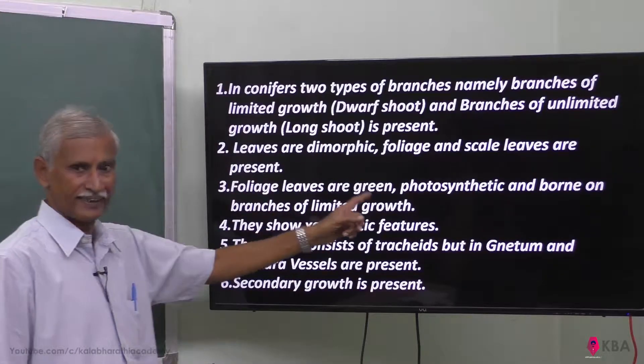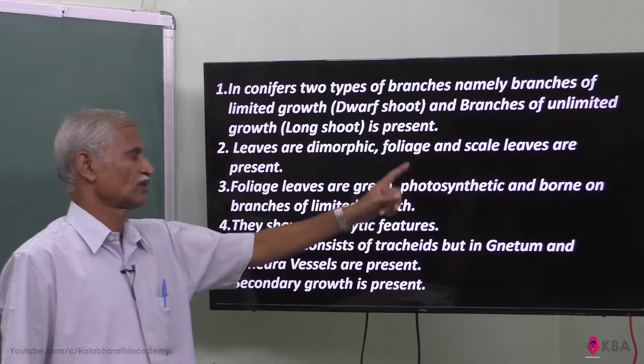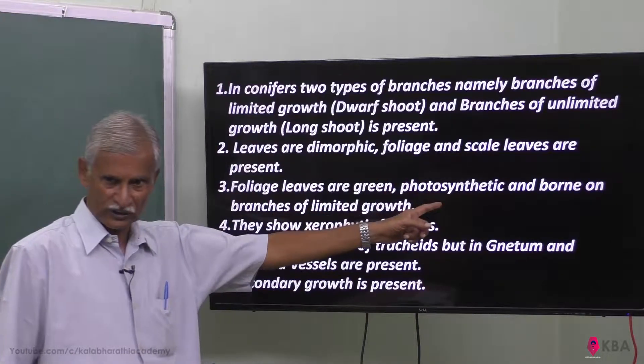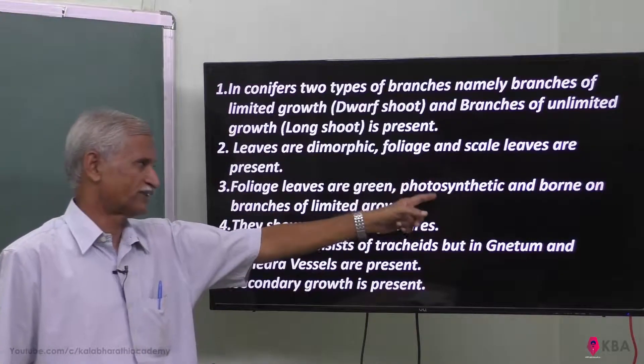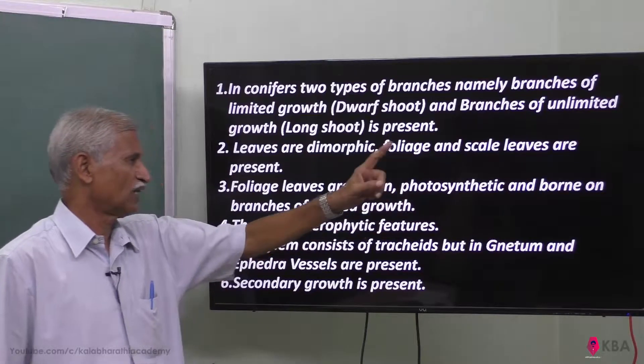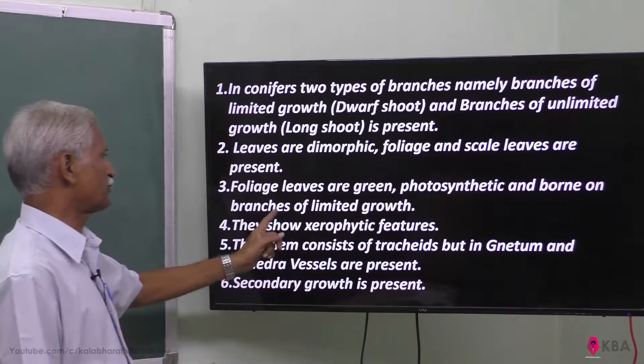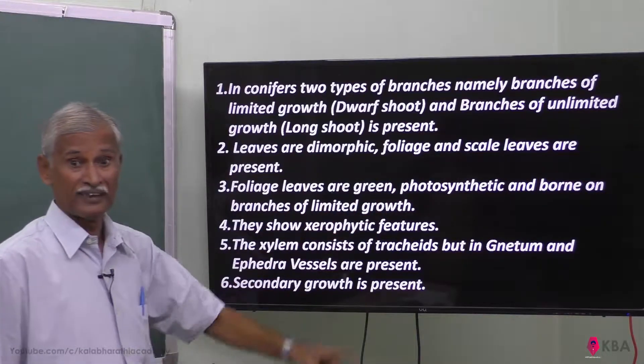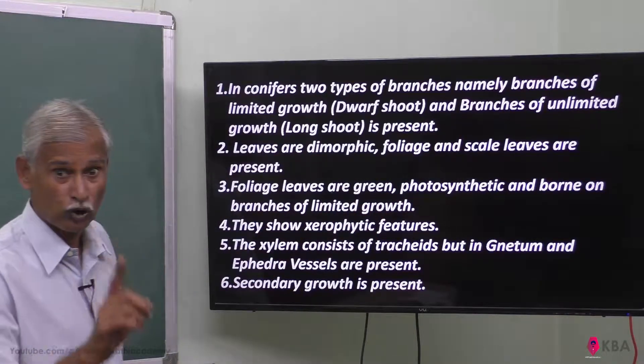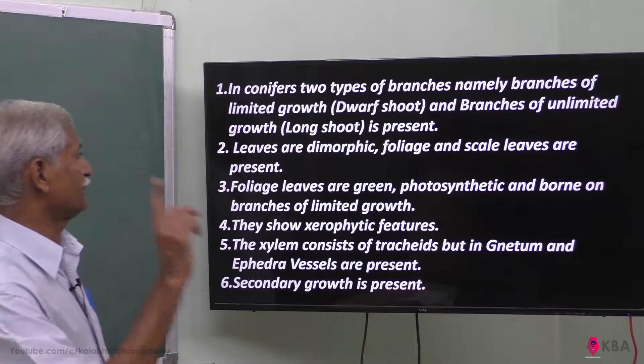Foliage leaves are green and photosynthetic, and they are borne on the branches of limited growth — that is, the dwarf shoot.